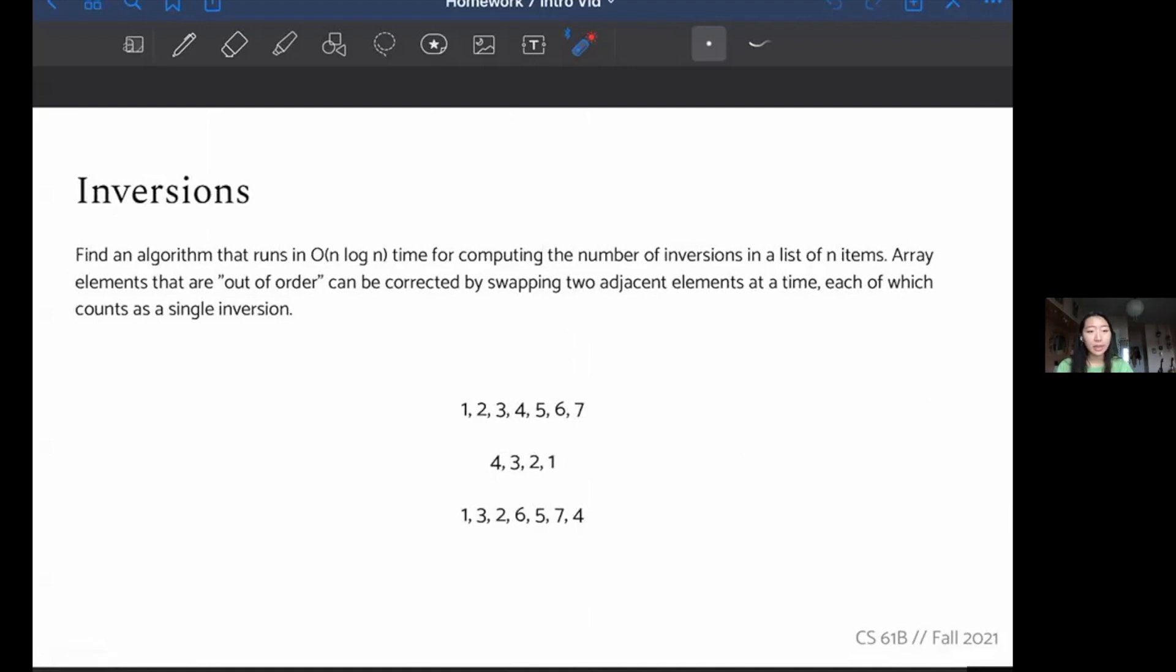The next one is inversions. This one says, find an algorithm that runs in O(n log n) time for computing the number of inversions in a list of n items. Array elements that are out of order can be corrected by swapping two adjacent elements at a time, each of which counts as a single inversion. I think the main thing for this problem is just understanding what an inversion really is. I want to go over these couple examples and see how many inversions do they have. So this list is sorted, and so because it's sorted, we just know there are no inversions, right? Everything is in the correct order. No two items are out of place with each other. So this has zero inversions.